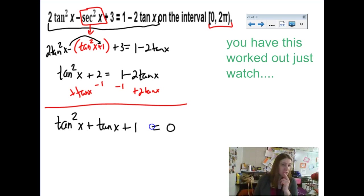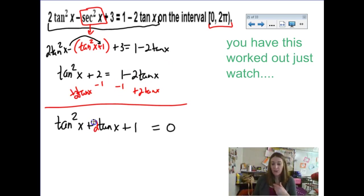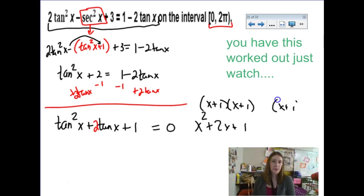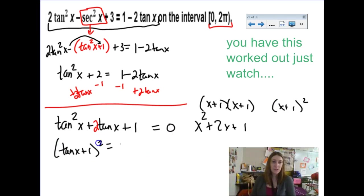We end up with tangent squared x plus 2 tan x plus 1 equals zero. If you think of this as a quadratic — like x squared plus 2x plus 1 — you could factor that as (x+1)(x+1) or (x+1)². Using that same factoring pattern: (tan x + 1)(tan x + 1) equals zero. So we're saying when is tan of x equal to negative one? I think about what parts of the unit circle produce a tangent of negative one — that would be quadrants 2 and 4, the π/4 family: 3π/4 and 7π/4.